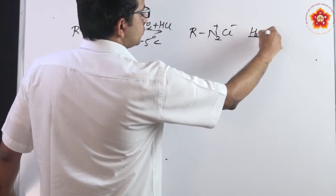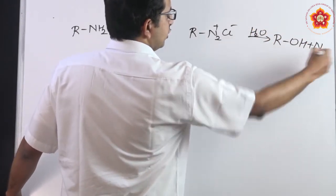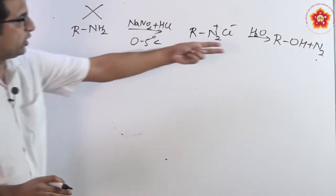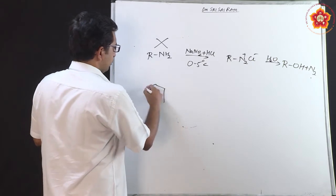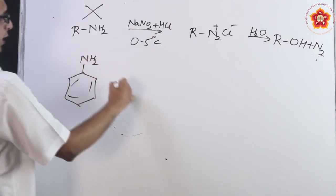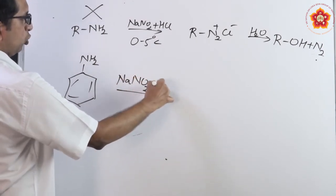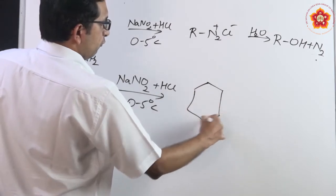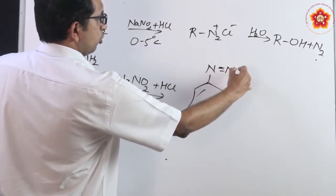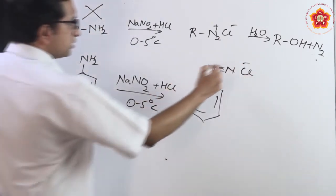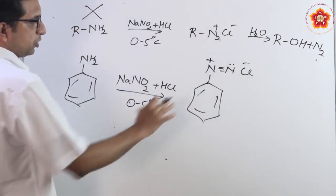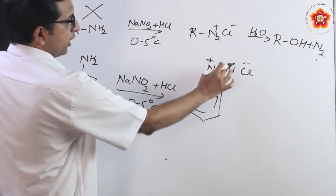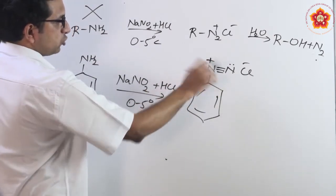Immediately it reacts with water and you get the corresponding alcohol along with nitrogen gas and various other byproducts. Now since it is unstable, you cannot utilize this reaction with aliphatic amines directly as you get alcohols. But with aniline, carrying out NaNO2 and HCl at 0 to 5 degrees centigrade gives an intermediate compound that is a little stable. A lone pair is present on one nitrogen while the other holds the positive charge, because nitrogen has 5 outer electrons — 3 in the triple bond and 2 as a lone pair.